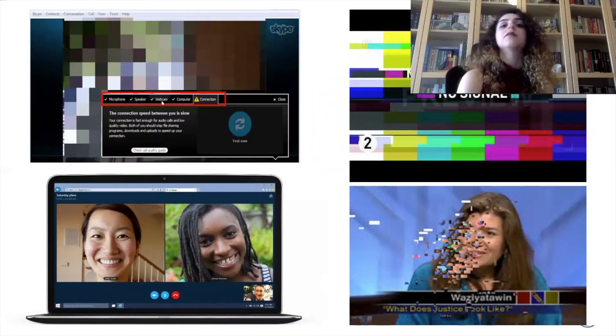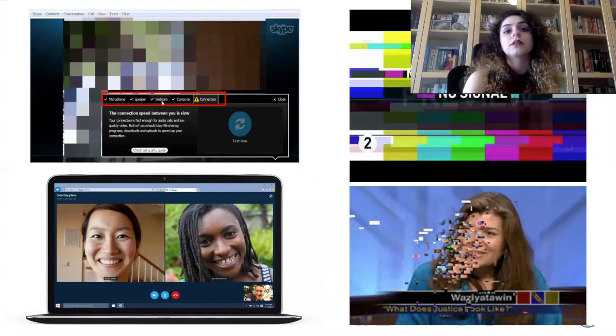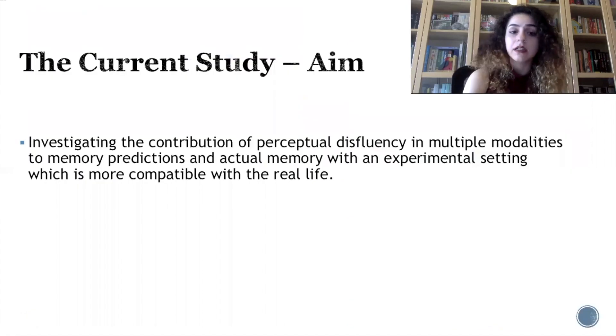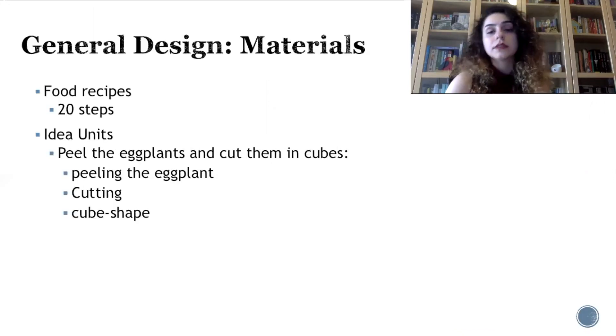Research has shown that different types of perceptual fluency manipulations have certain effects on people's actual memory and their predictions about their memory. In our study, we manipulated perceptual fluency in both auditory and visual modalities, and our aim was investigating the contribution of perceptual dysfluency in multiple modalities to memory predictions and actual memory with an experimental setting more compatible with real life.